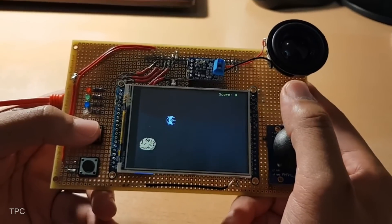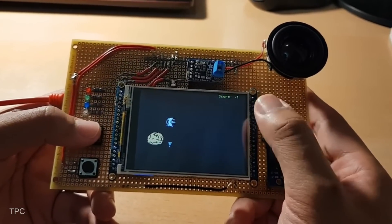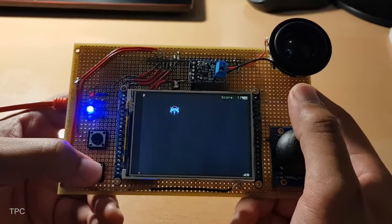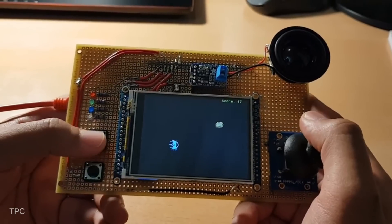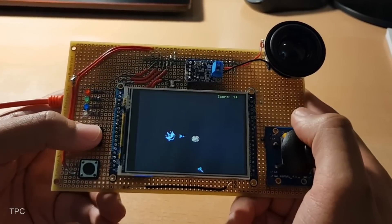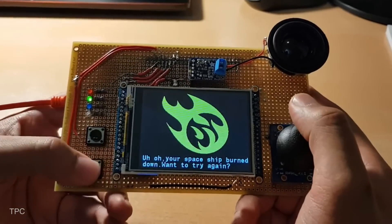The game starts with the spaceship placed at a random position, while asteroids appear from different directions. The player uses the joystick to control the spaceship's movement and buttons to fire rockets at the incoming asteroids.